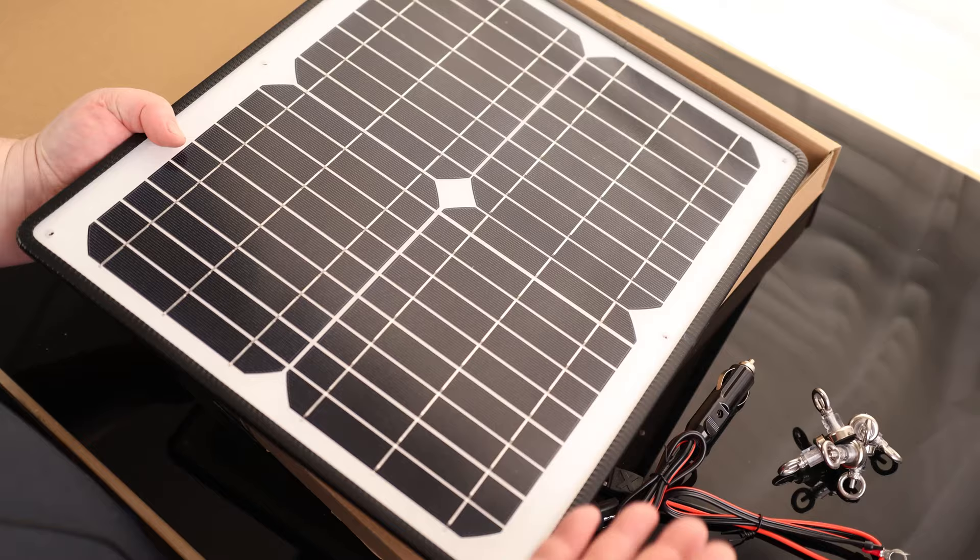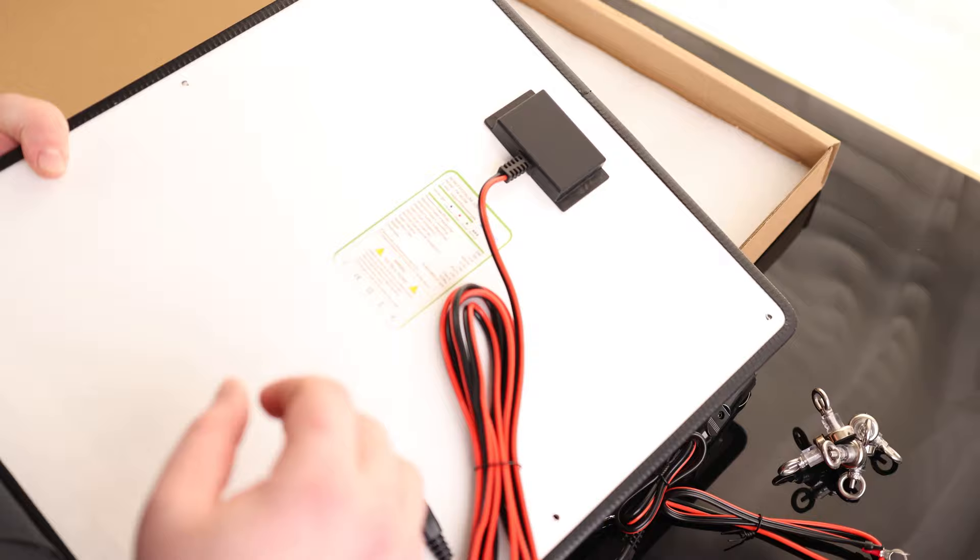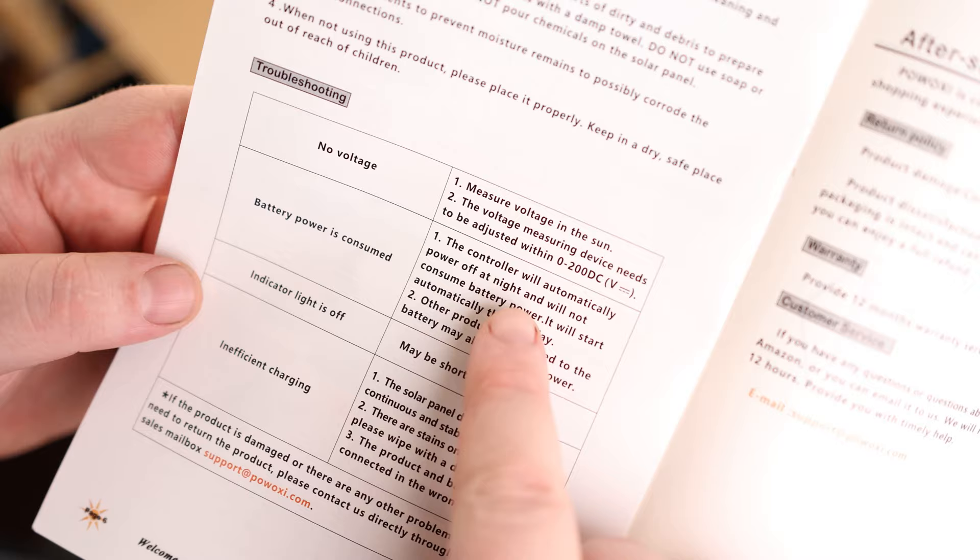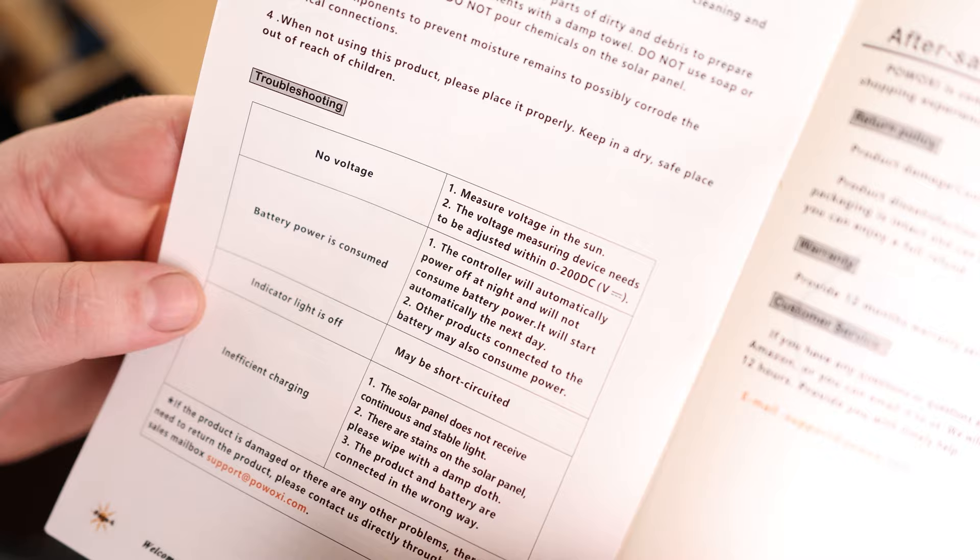You can see this is a double wide, so that's how you can tell this is a twenty watt charger. We got our controller right here so we're not going to overcharge that battery. Essentially we can just plug this in and not have to worry about the battery being dead if we come back a month or even months later. The controller will automatically shut off at night when it's not generating power.